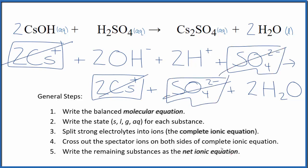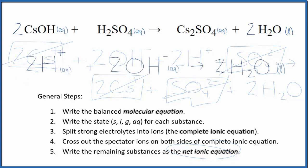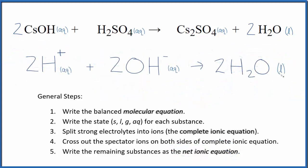What's left is our net ionic equation for CsOH plus H₂SO₄. Let's clean it up and write the states. This is the balanced net ionic equation for cesium hydroxide and sulfuric acid.